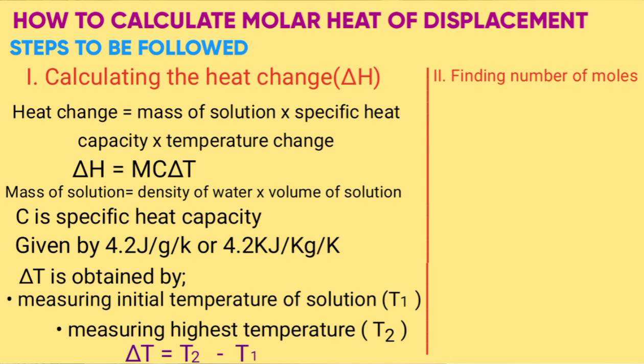Step 2 will be determining the number of moles. Number of moles can be obtained by two ways. One: if given the mass in grams of the metal, then number of moles is mass in grams over molar mass.